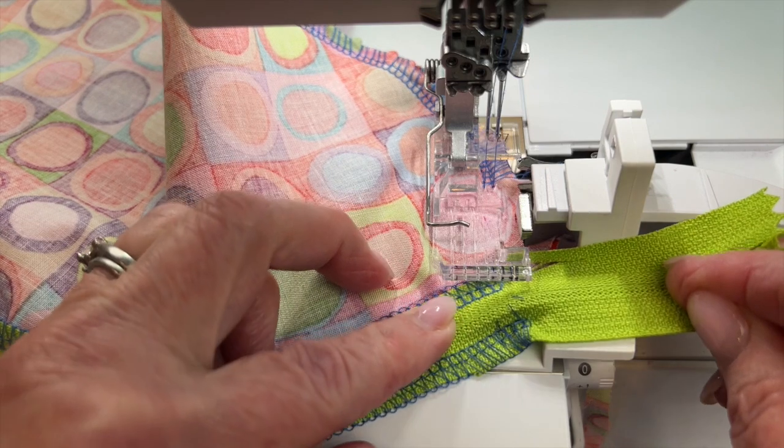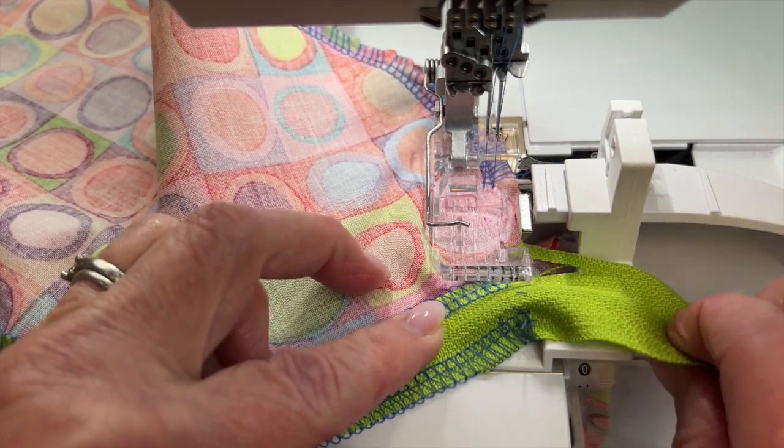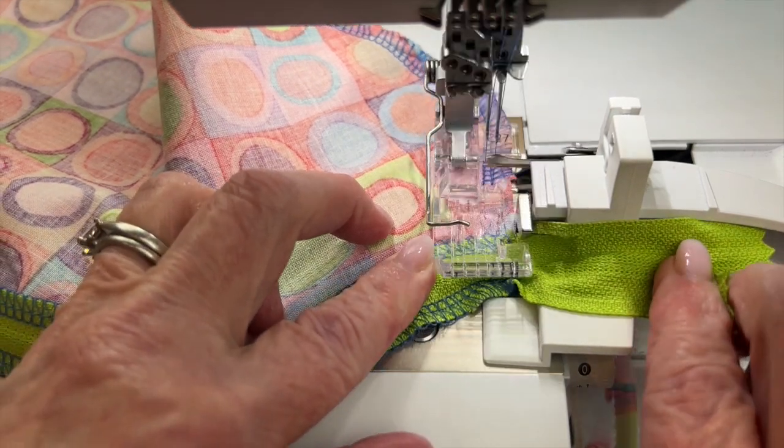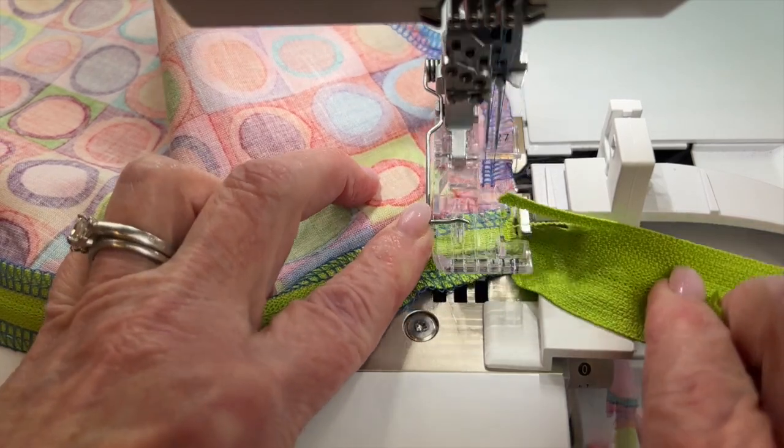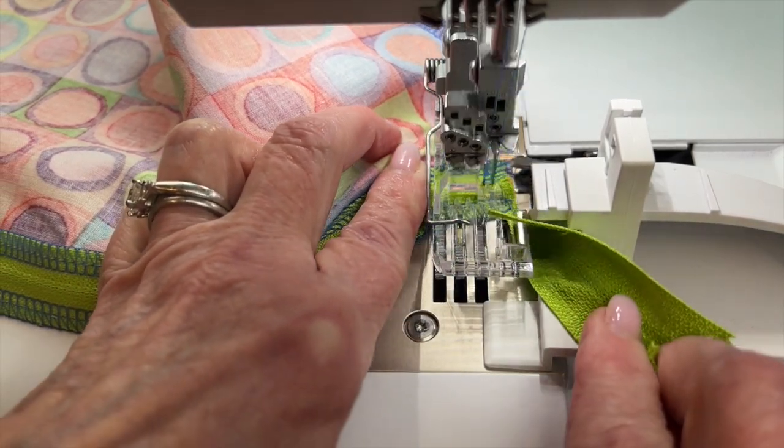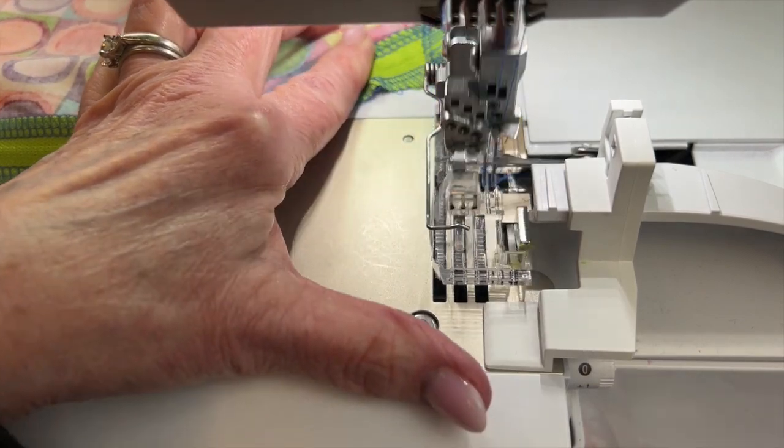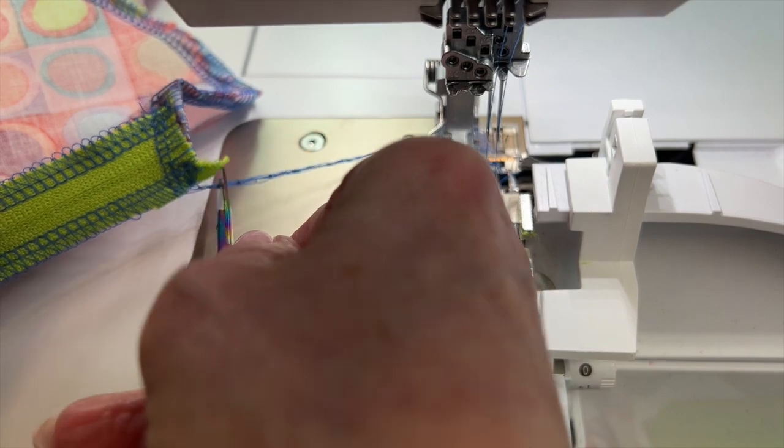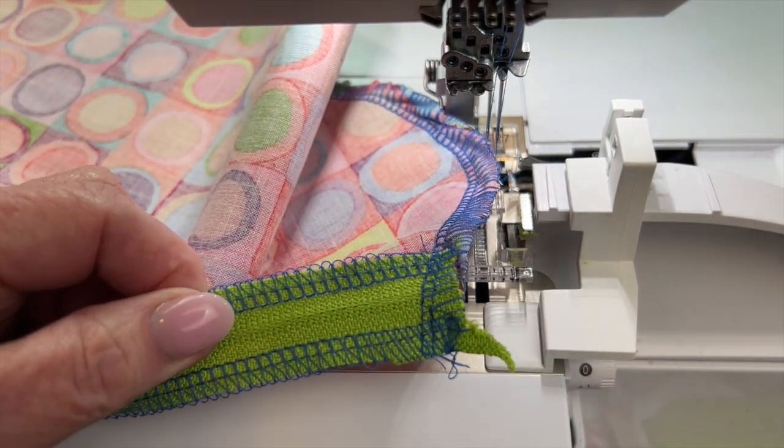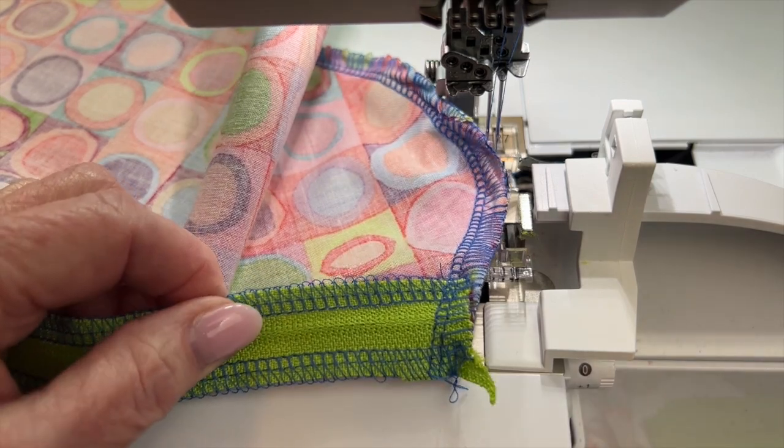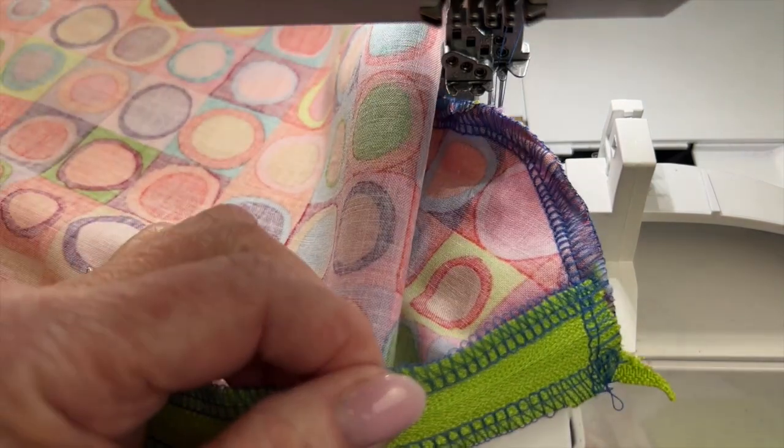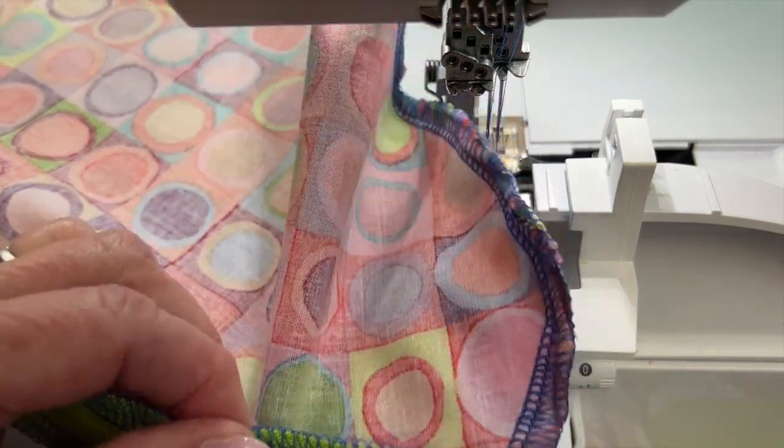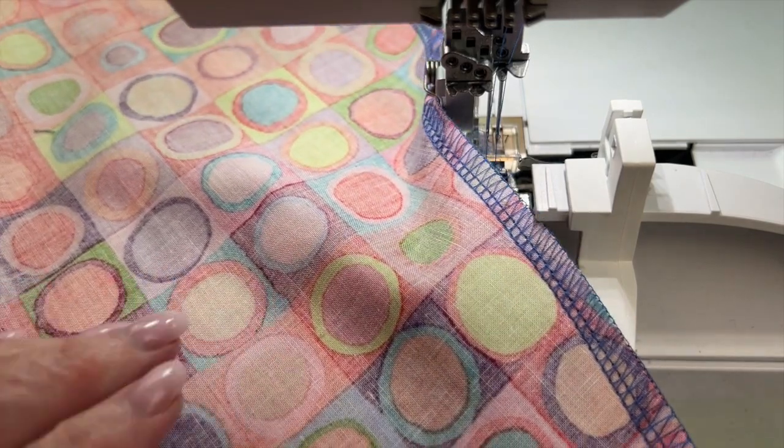I'm lifting my presser foot a few times just to make sure I'm aligned with where I want to be on the fabric, and I'm going to chain right off and cut my chain. I think my knife missed just a smidge of this, so I can cut this off with my scissors, no big problem there. I'm going to come around and do the second side.